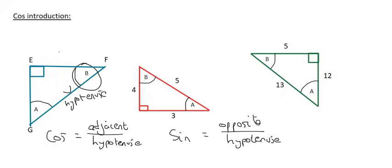Let's look at this red triangle. If you were standing at angle A and you wanted to know the cos, remember cos is the adjacent, so the adjacent is 3 and the hypotenuse is 5. So cos A equals 3 over 5.